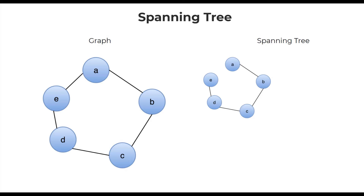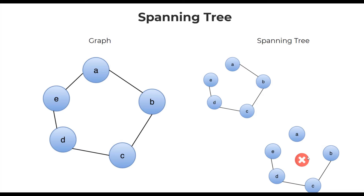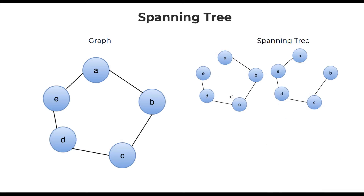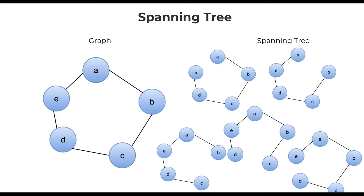Now, what is a spanning tree? A spanning tree is simply a tree in which all the vertices are included — all the vertices are connected. We cannot leave a vertex disconnected from the rest of the vertices, so that cannot be a spanning tree. A graph can have more than one spanning tree. If you take this graph and ignore the edge between A and E, you get a spanning tree. If you ignore a different edge, you get another spanning tree. Similarly, we can construct several more spanning trees for the same graph.